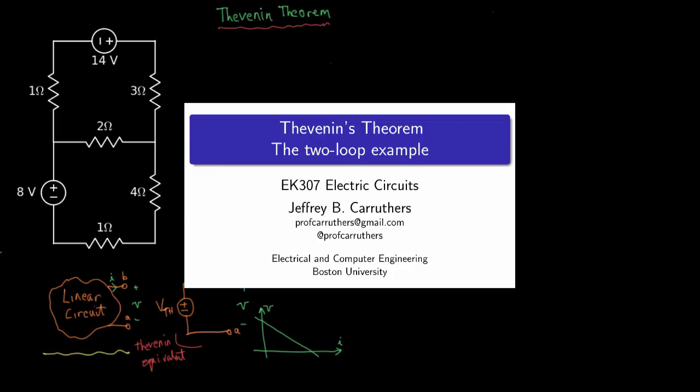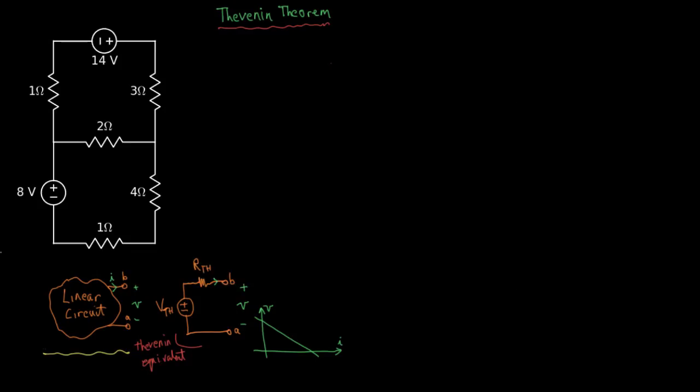In this tutorial I'll review Thevenin's theory and apply it to the analysis of this double loop circuit shown above. Thevenin's theory says that you can take any linear circuit and consider the voltage and current at two nodes, A and B,